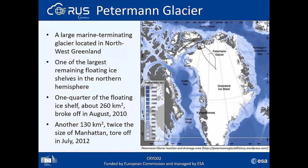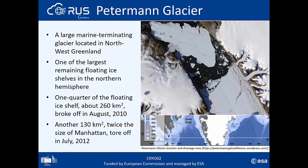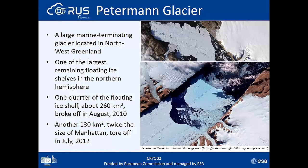Today we will be looking at the Petermann Glacier in northwestern Greenland. It's a large marine-terminating glacier and one of the largest remaining floating ice shelves in the Northern Hemisphere, with approximately 70 kilometers of floating ice. It has undergone quite rapid changes in the last approximately 10 years: in August 2010, approximately one quarter of the floating ice shelf — about 260 square kilometers — broke off, and then in July 2012 another approximately 130 square kilometers, roughly twice the size of Manhattan, again tore off, reducing the size quite significantly.